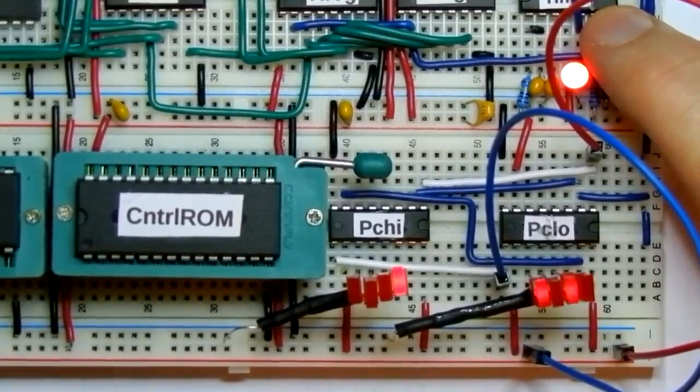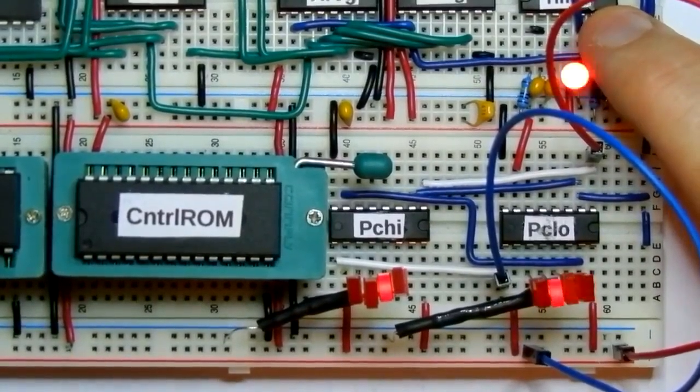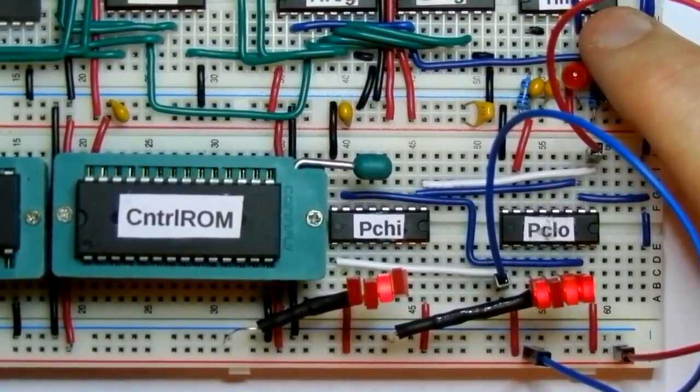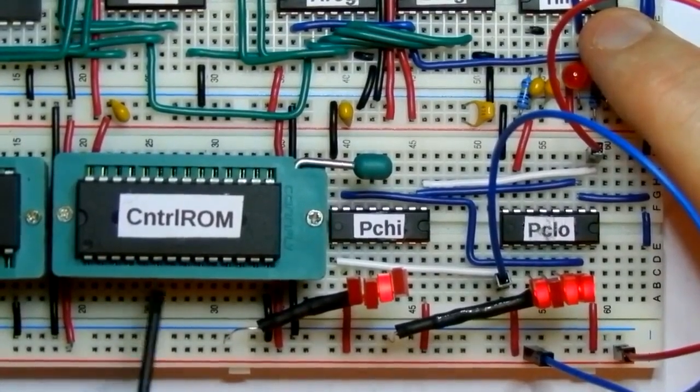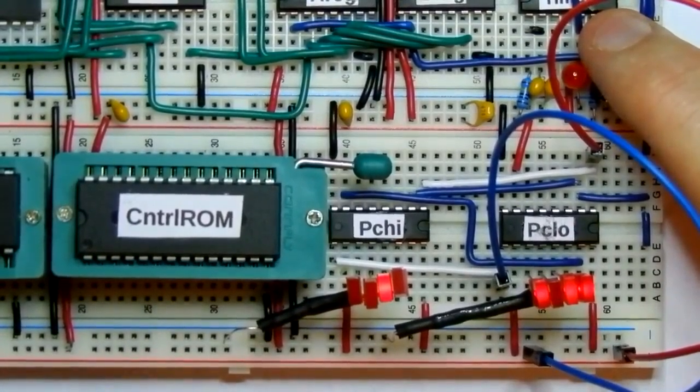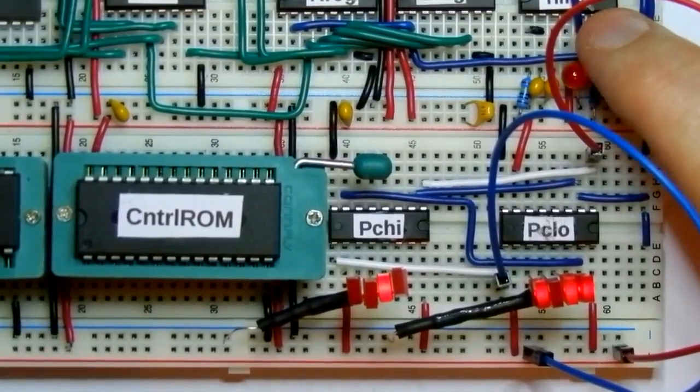In the next video I'll have the eight address wires, the eight program counter output wires loaded up to be addresses for the ROMs, and we should start actually seeing some values come out on those ROMs.